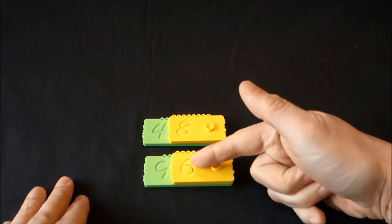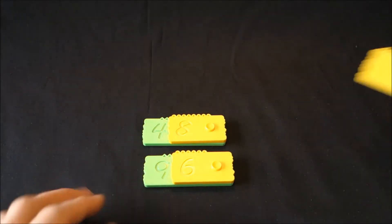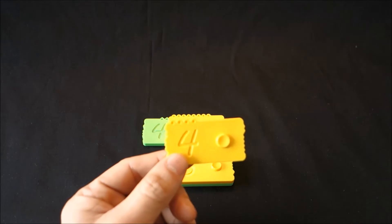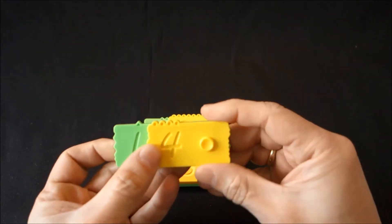We start with the yellow bricks. So 8 plus 6, what is that? We build it as 14. Here we have 14.